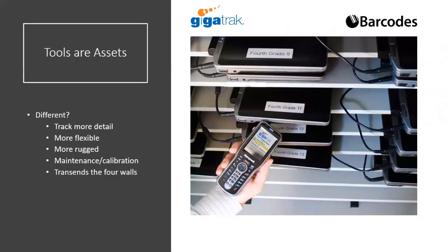Tool tracking solutions are generally a lot more rugged. Even though a consumer-grade cell phone or tablet can be used to track tools, most of the tool tracking solutions we see use industrial phones and tablets that are a better fit in the field. They also come with a built-in barcode scanner, so you don't have to use your camera, and many can be paired with RFID readers.